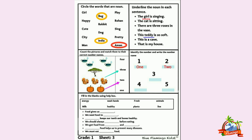Count the picture and match them to their correct number names. Number names are the spellings of counting — 1, 2, 3, 4. The spellings of counting are called number names. As you can see there are 4 teapots — we will match it with four: F-O-U-R. Second, one tree — we will match it with one: O-N-E.